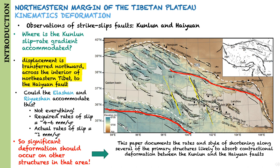This paper documents the rates and style of shortening along several of the primary structures likely to absorb contractional deformation between the Kunlun and the Haiyuan faults, focusing particularly on the Qinghai-Nanshan and the Gonghe-Nanshan.